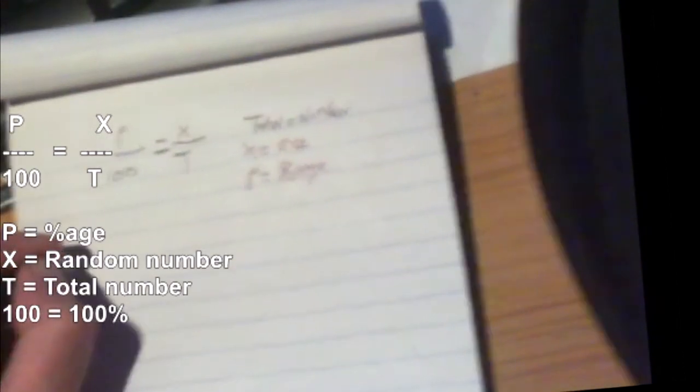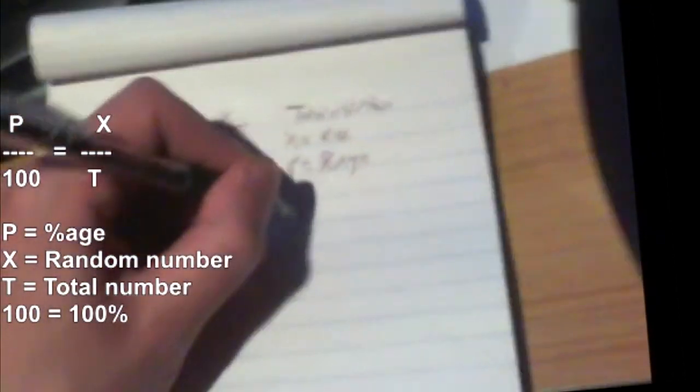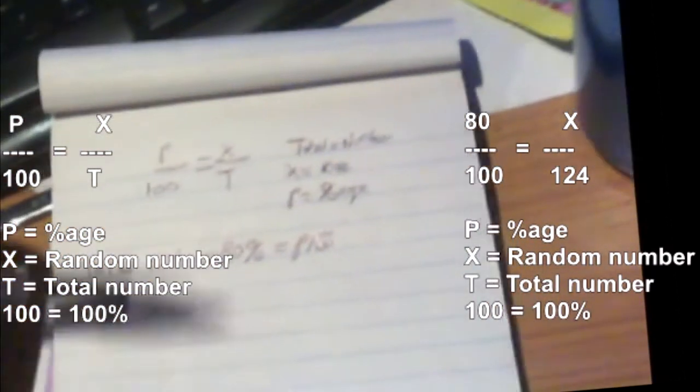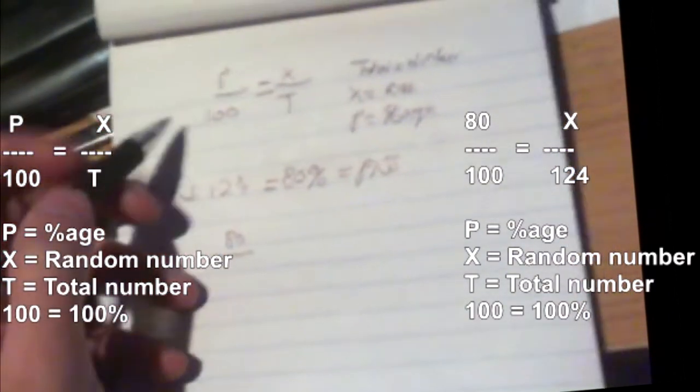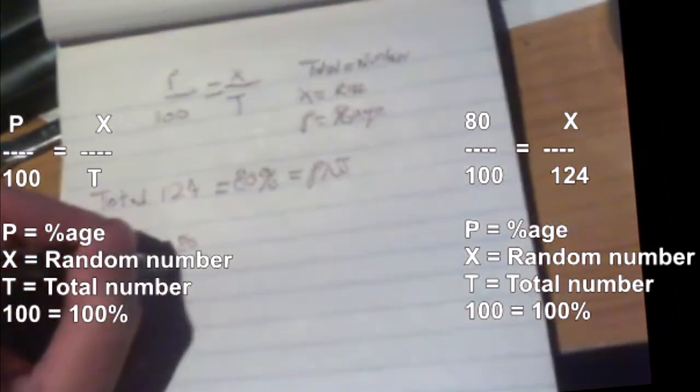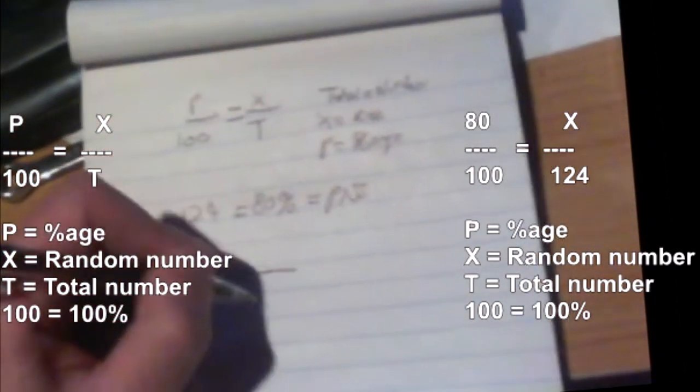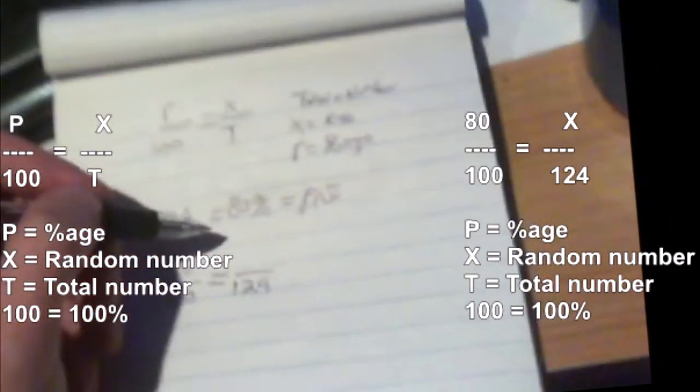So the total number of questions in an exam on Gleim is 124 questions, and we need 80 percent to pass. How many questions do we have to get correct to pass that test? Let's set this up. 80 is the percentage. The maximum number of questions is 124. So maximum 100 equals the total number of questions, 124. We're trying to find the number that equals 80 percent.